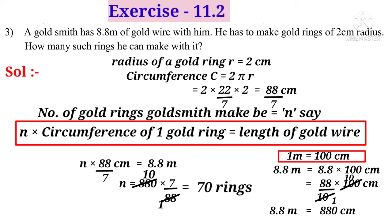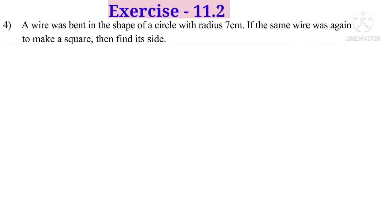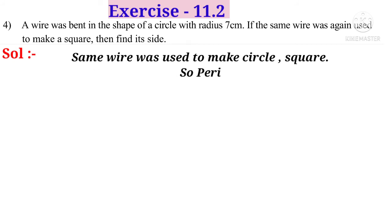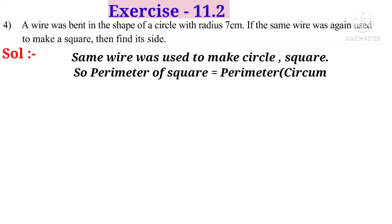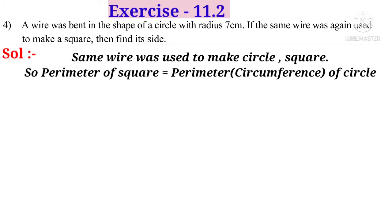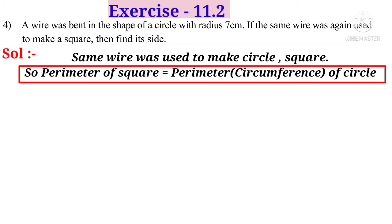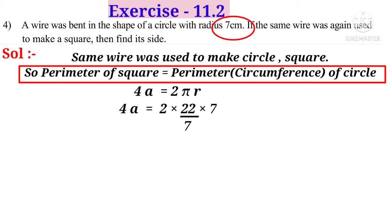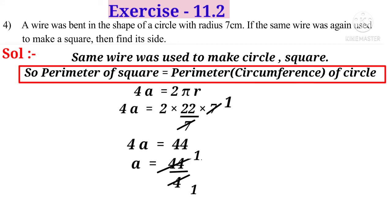Fourth problem: A wire was bent into a circle of radius 7 centimetres. The same wire is used to make a square — find its side. Solution: Since the same wire is used, the perimeter of the square equals the circumference of the circle. So 4a equals 2πr equals 2 × (22/7) × 7. On simplification, 7 cancels giving 4a equals 44, so a equals 44/4 equals 11 centimetres.